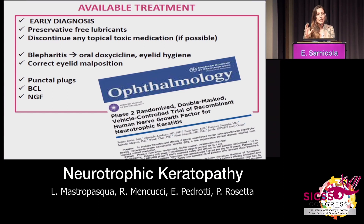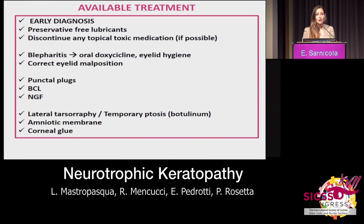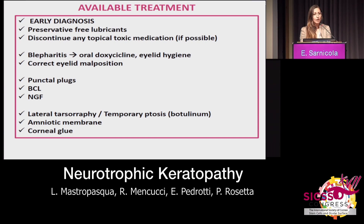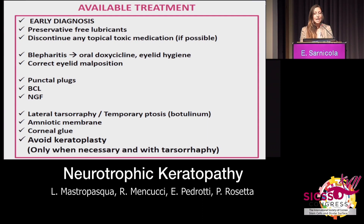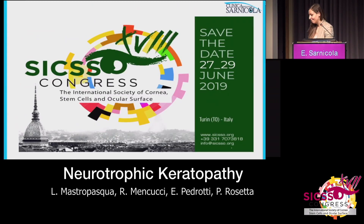First of all, one has to fix the eyelids and understand if there are other contributing causes. When this is not enough, one should combine a tarsorrhaphy — which is very often neglected but provides excellent results. Botulinum toxin can be used as well, but tarsorrhaphy probably provides a better outcome because it allows for more blinking and therefore squeezing of the glands. AMT should be used when necessary, and we can also use glue. We should stay away from keratoplasty as much as possible — only when indispensable for large perforations, and always combined with tarsorrhaphy.